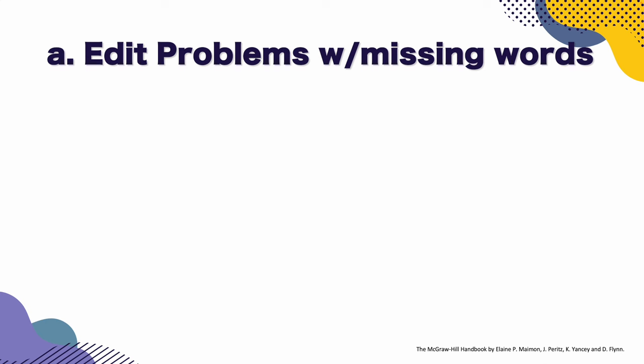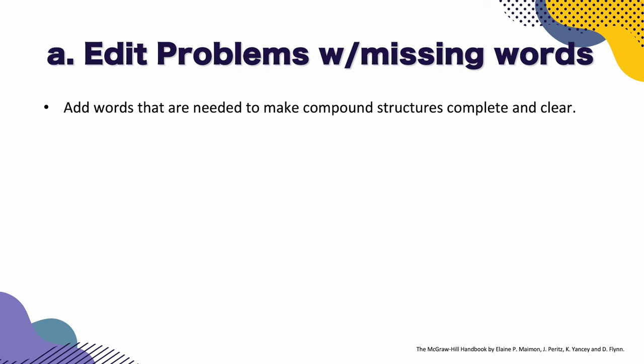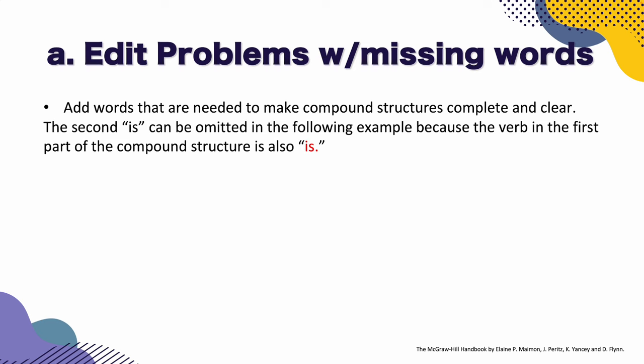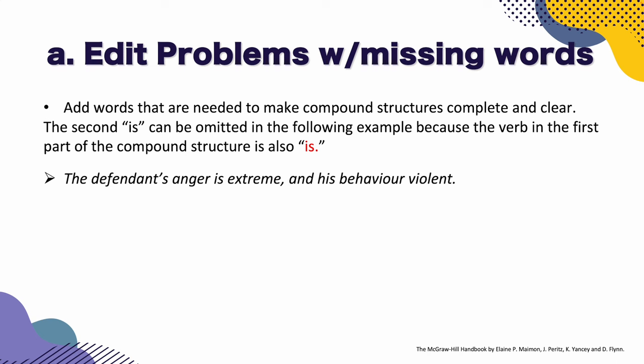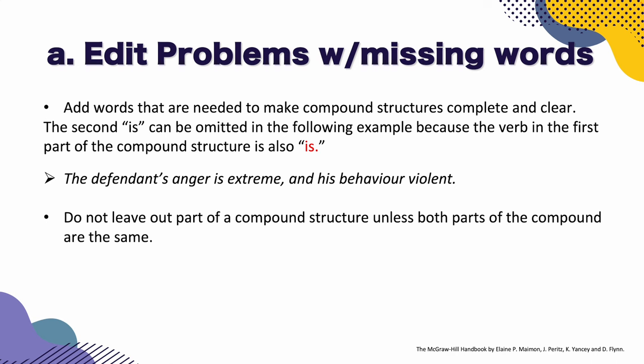Let's take a look at how to edit problems with missing words. Add words that are needed to make compound structures complete and clear. The second 'is' can be omitted in the following example because the verb in the first part of the compound structure is also 'is': 'The defendant's anger is extreme and his behavior violent.' We can say 'his behavior is violent,' but it's not needed because we already mentioned 'is' in the first clause. Do not leave out parts of the compound structure unless both parts of the compound are the same.